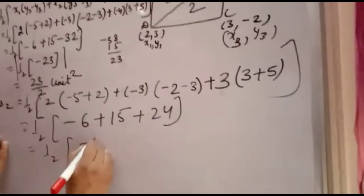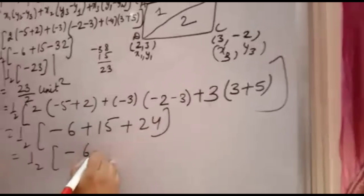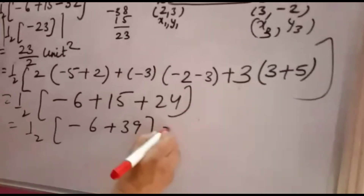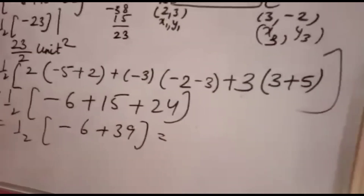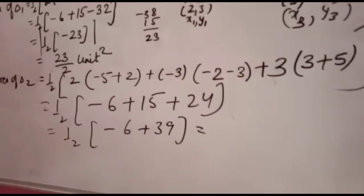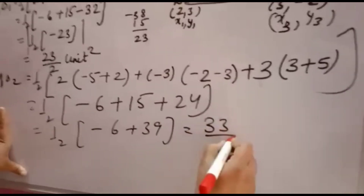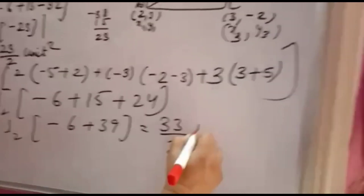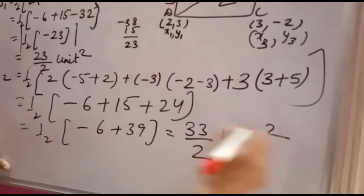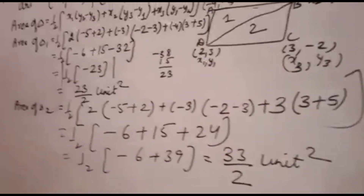Adding the values: 15 plus 24 gives 39. Then -6 plus 39 gives 33, so the area of triangle 2 is 33/2 square units.